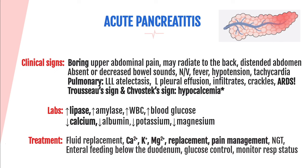Replete electrolytes, specifically keeping calcium, potassium, and magnesium levels normal. Pain management is important due to severity of pain. Patients may need an NG tube to suction to decrease gastric secretions and rest the pancreas. Enteral feeding can be started below the level of the duodenum. Glucose control is needed — these patients will be hyperglycemic and will need extra insulin. Monitor respiratory status closely for any acute changes.